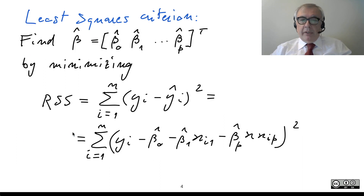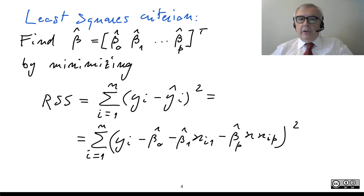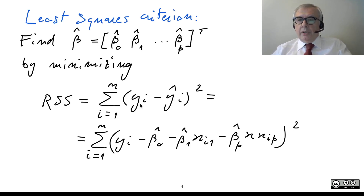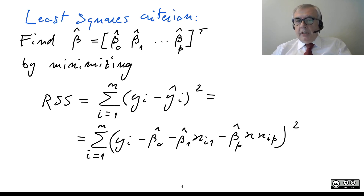The next step is performing the estimation, and we are going to use the least squares criterion. The idea is that we choose the values of beta that make our predictions as close as possible to the observed data. As a measure of closeness, we use the residual sum of squares, which is the sum of the squared differences between the observations and the predictions.